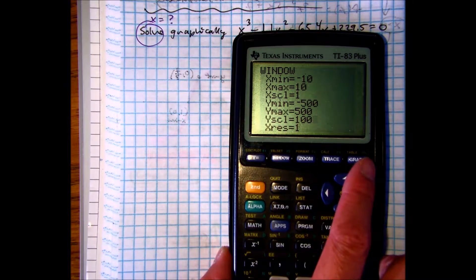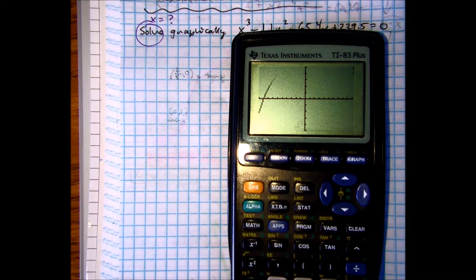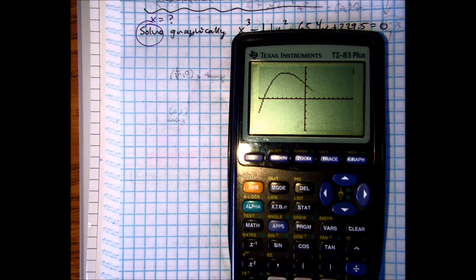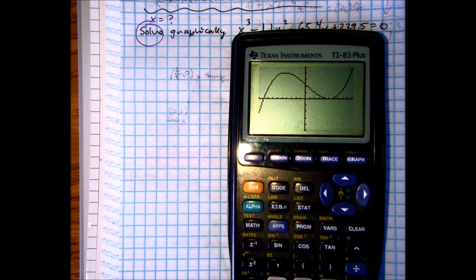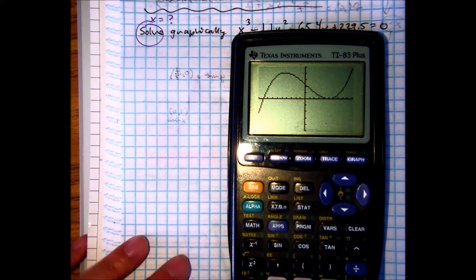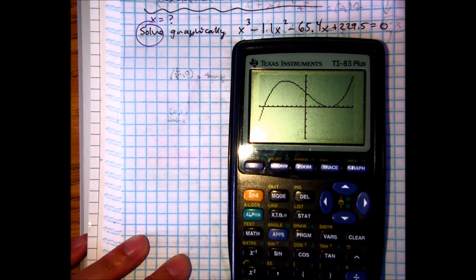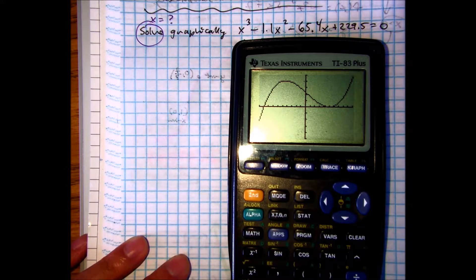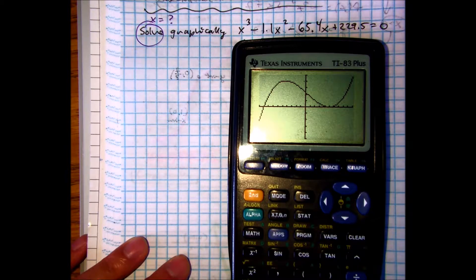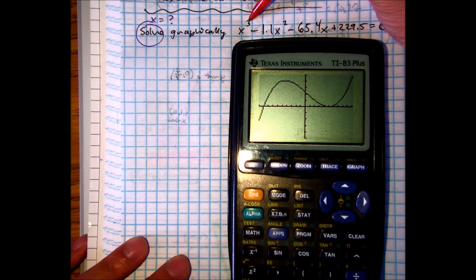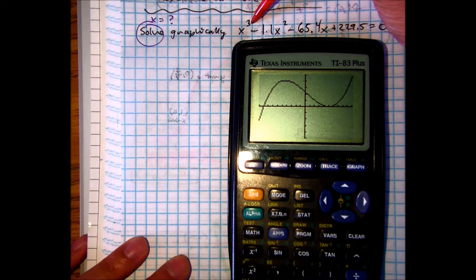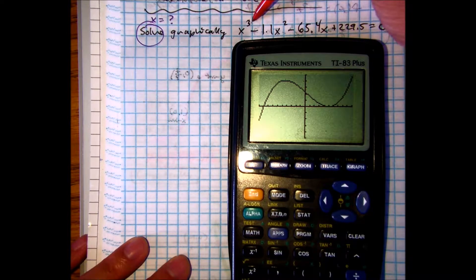Let's go ahead and press graph. Looks nice now, right? Now we can actually see kind of like a picture of our window. Class, what's the highest degree? The highest power is 3. This tells you the maximum number of x-intercepts. Class, what does this tell you?